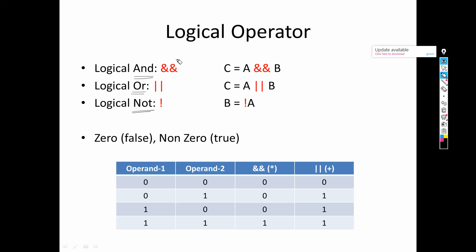For logical AND we write ampersand two times (&&). For logical OR we write the pipe symbol two times (||). For logical NOT we use the exclamation mark (!). Logical AND and OR are binary operators — they take two operands with the operator in between — while logical NOT is a unary operator with only one operand.